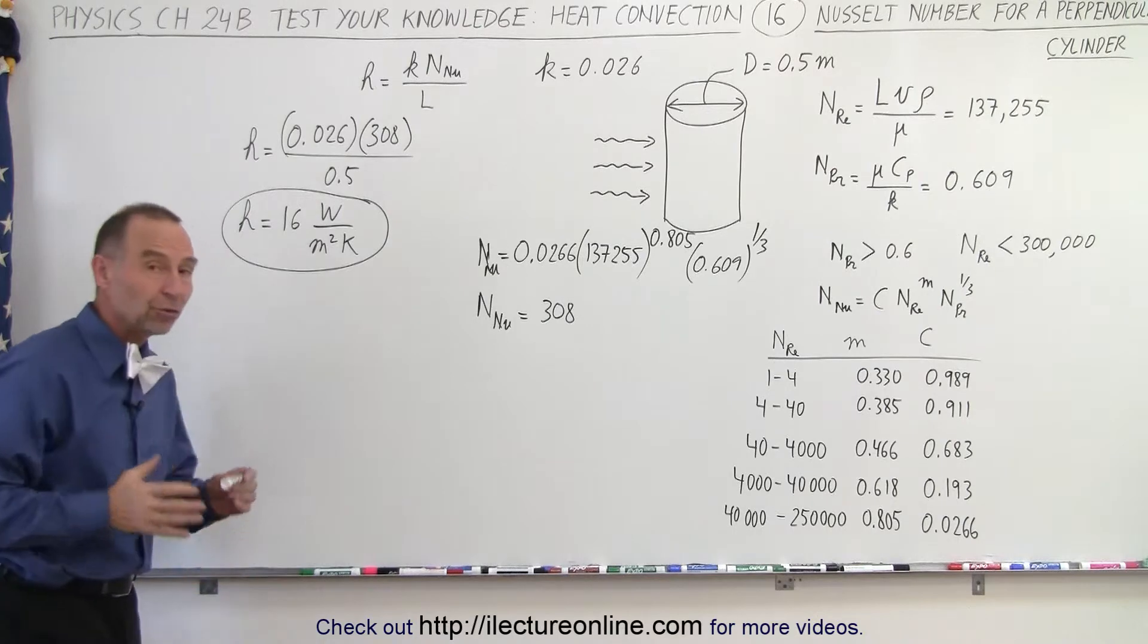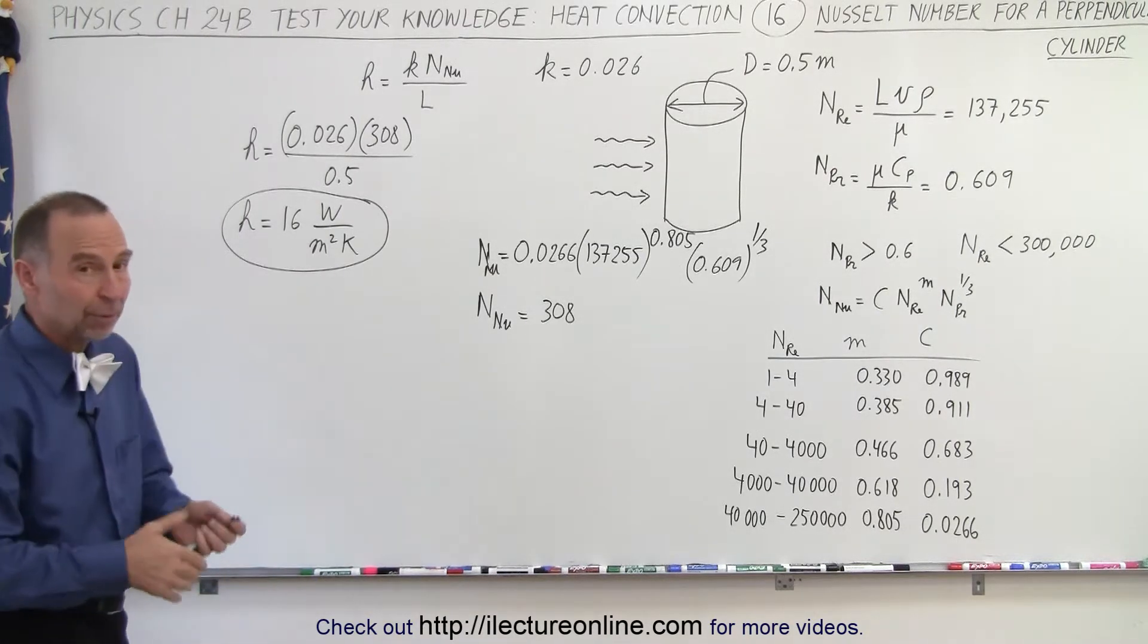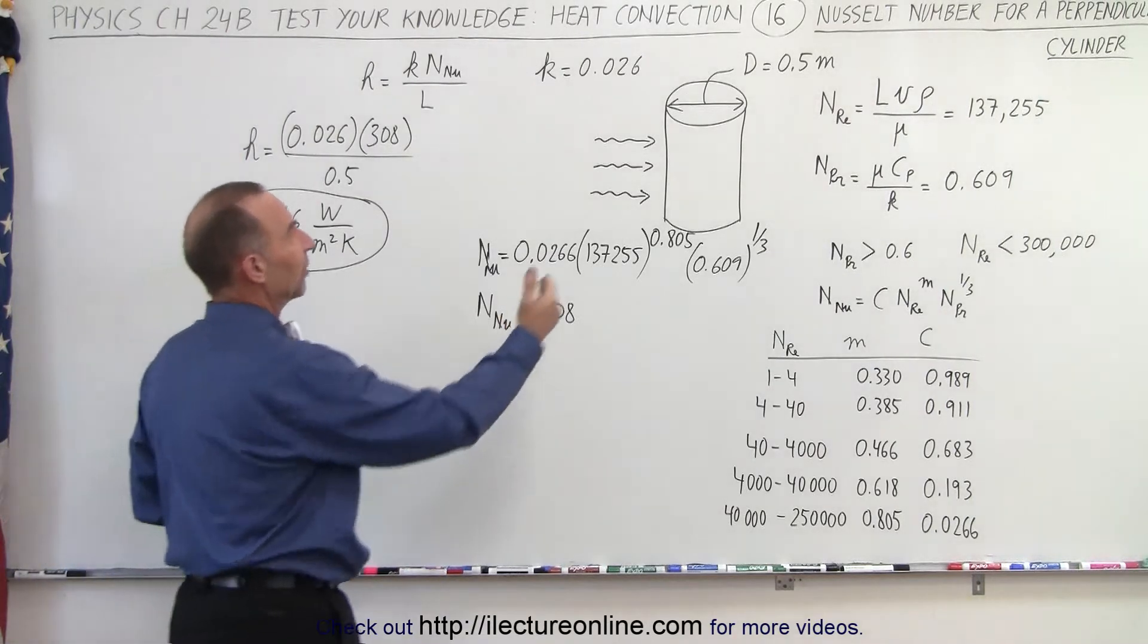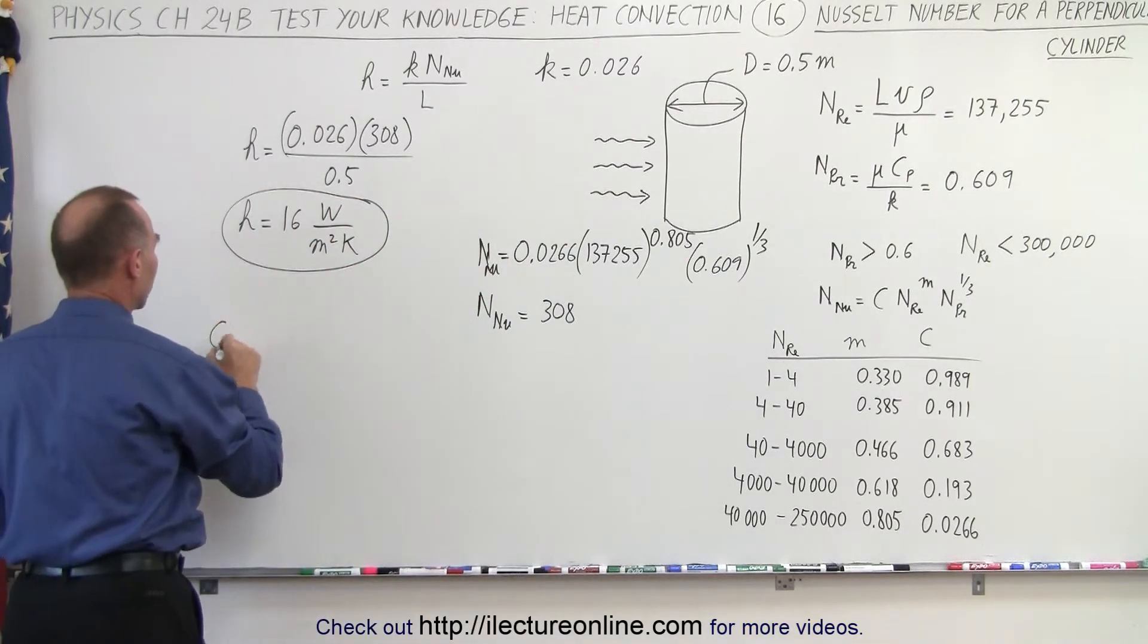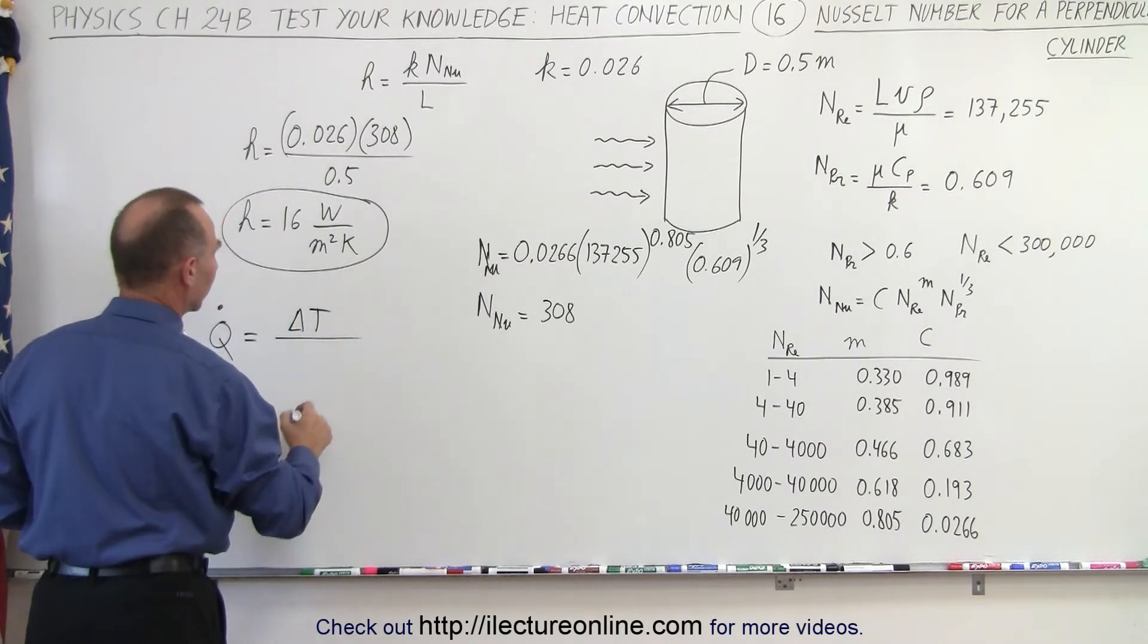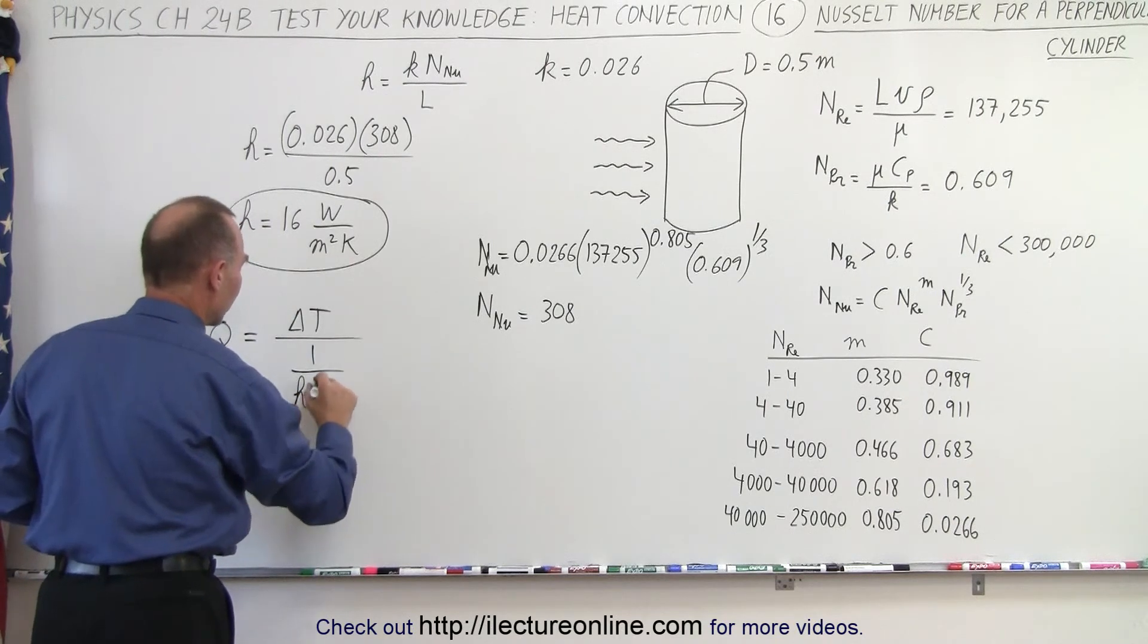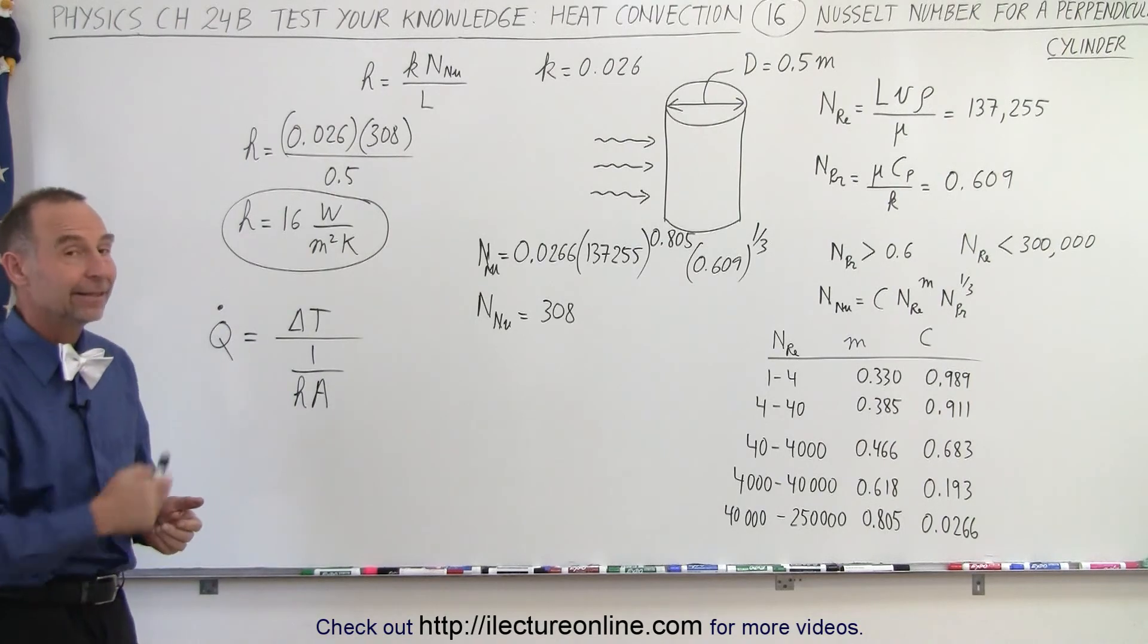So once we have the transmission coefficient, we can then calculate, of course that wasn't part of our problem, but let's go ahead and put it on the board, the amount of heat we can extract from, let's say, a hot cylinder when cold air flows over the cylinder. And that would then be calculated by saying Q dot, the amount of heat per unit time, would be equal to the difference in the temperature divided by 1 over the transmission coefficient times the surface area of the cylinder. And that is how it's done.